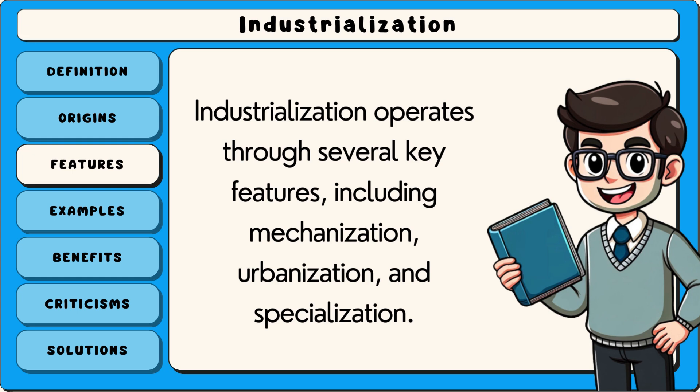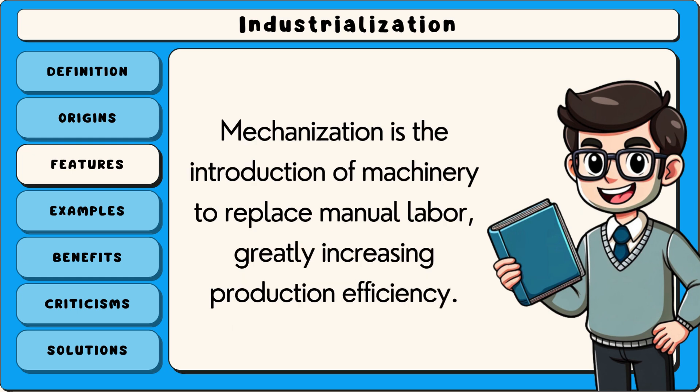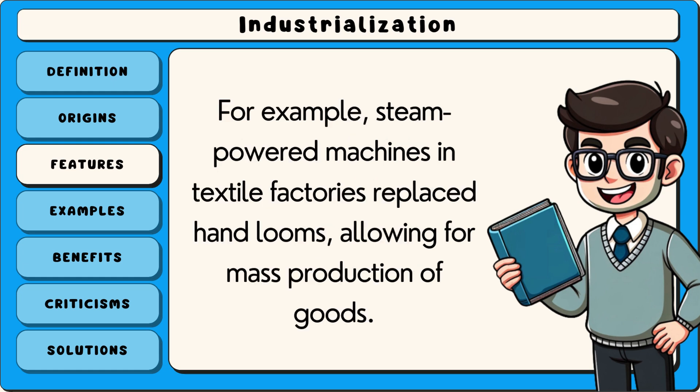Industrialisation operates through several key features, including mechanisation, urbanisation and specialisation. Mechanisation is the introduction of machinery to replace manual labour, greatly increasing production efficiency. For example, steam-powered machines in textile factories replaced hand looms, allowing for mass production of goods.